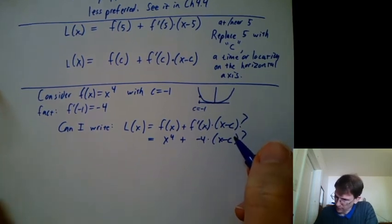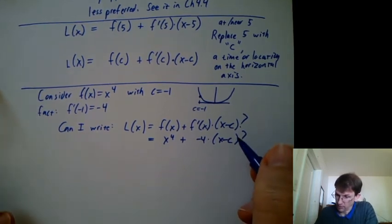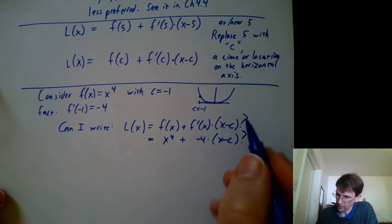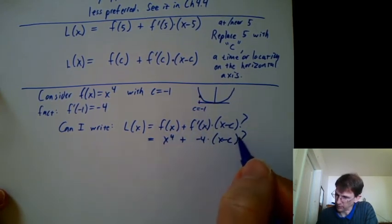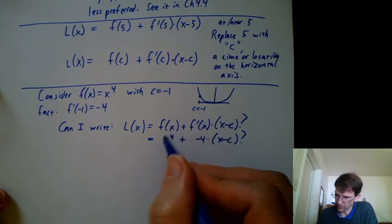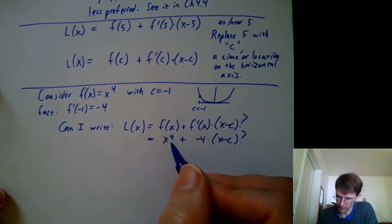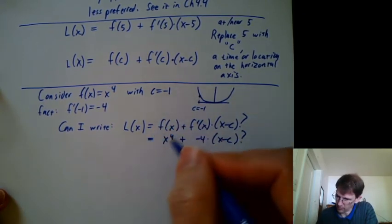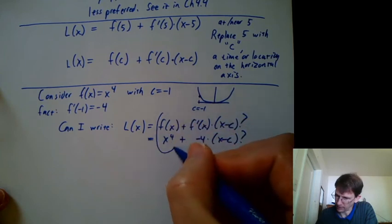Well, our tangent line formula should give us a line. Maybe I'm not too controversial in saying that. But is this formula linear? Well, this part is linear, but this part has an x to the fourth. That's not going to be linear. This part of the formula should not have an x in it.